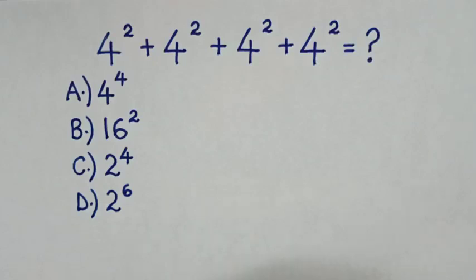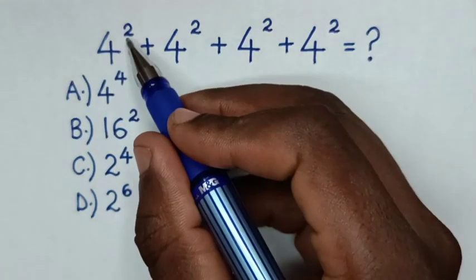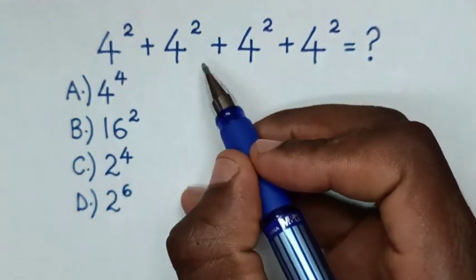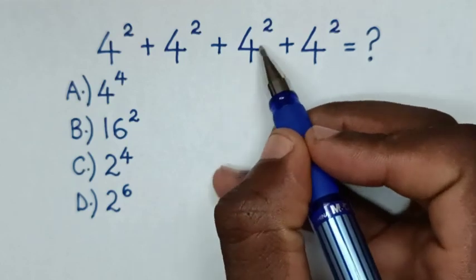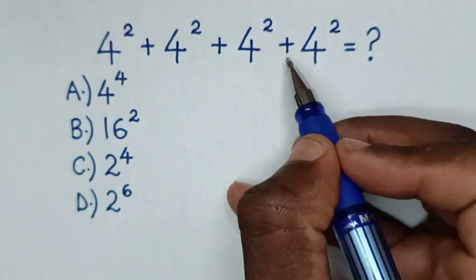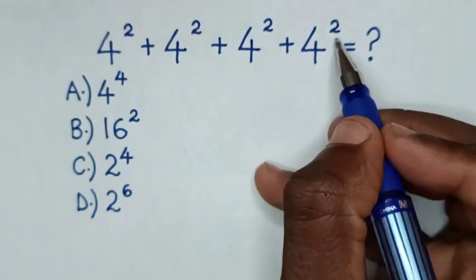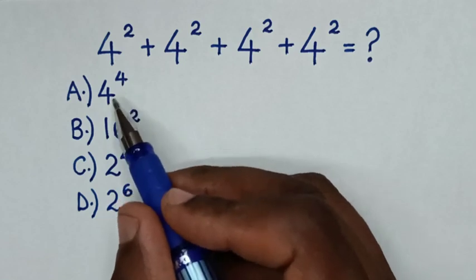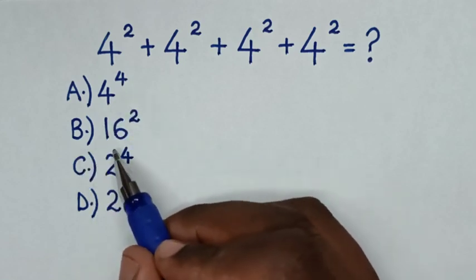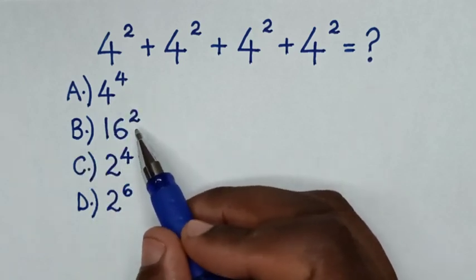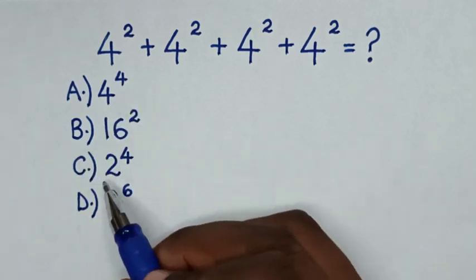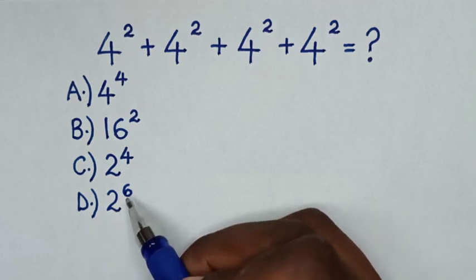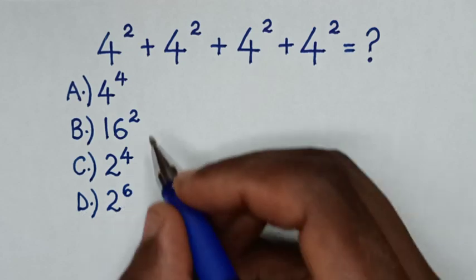Hello! How to solve 4 power of 2 plus 4 power of 2 plus 4 power of 2 plus 4 power of 2, by selecting between the answers: A) 4 power of 4, B) 16 power of 2, C) 2 power of 4, D) 2 power of 6.